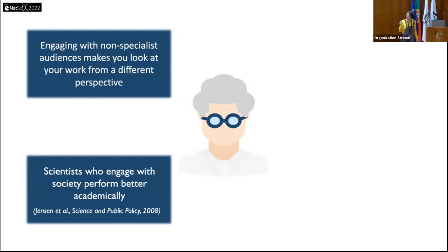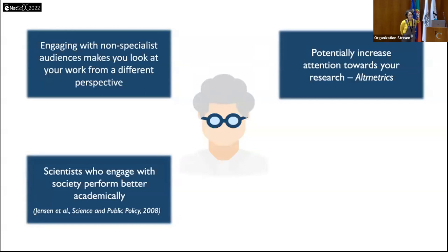Scientists who engage with society actually perform better academically. This is the title of a paper I cite here — it has been shown in a large-scale study at a research institution in France that scientists who engaged in more science communication activities also had a better academic track record. And communicating can also potentially increase societal attention towards your research.